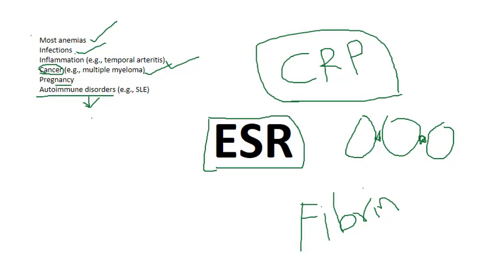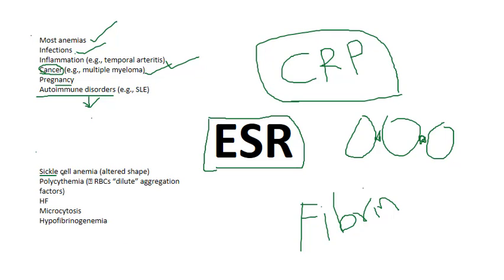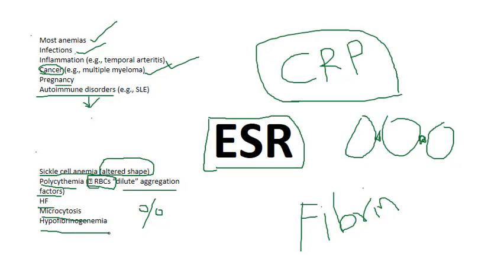Some conditions that decrease ESR include sickle cell anemia, because the altered shape of RBCs prevents fibrinogen from attaching. In polycythemia, increased levels of RBCs cause dilution of aggregation factors. In heart failure and microcytosis, RBCs are very small and can't be aggregated by fibrinogen. In hypofibrinogenemia, ESR is also decreased.